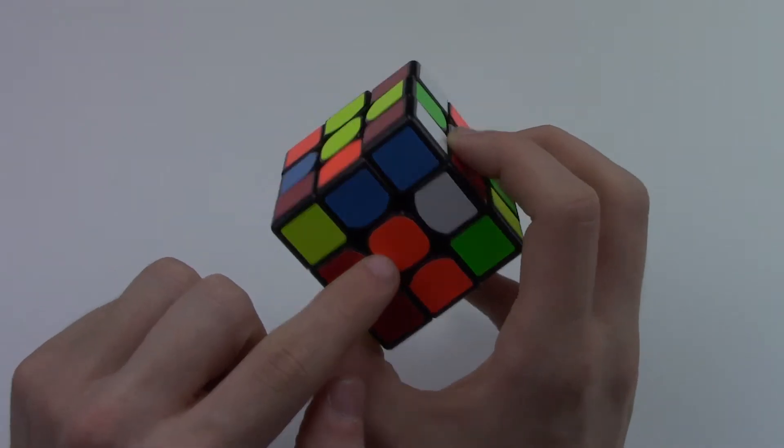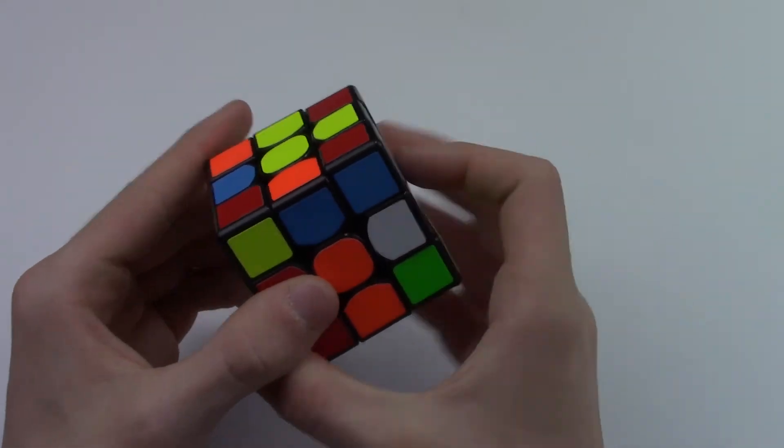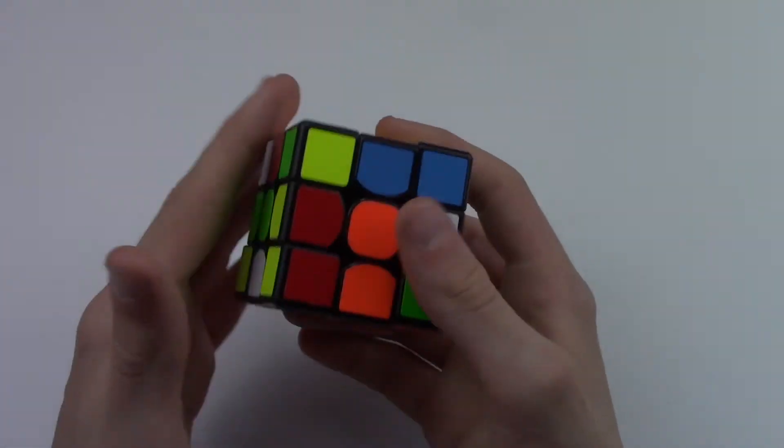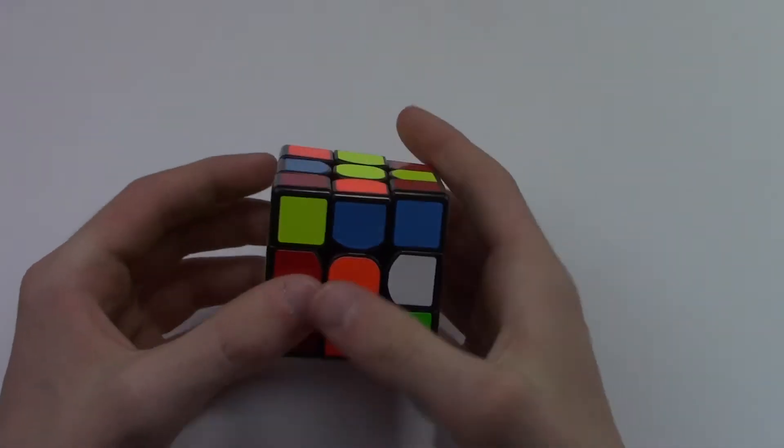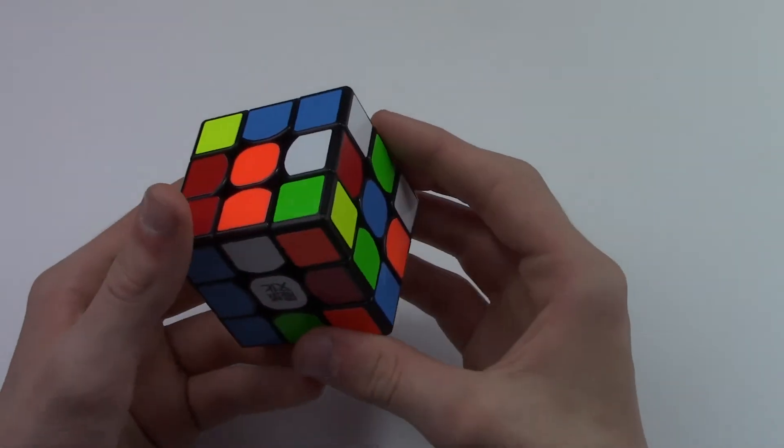What you want to do is have the ability to memorize the color scheme. So like knowing that there's orange, red, yellow, blue, green, and white without looking around at the colors. So you want to just cover it up and learn and memorize the color scheme so you can solve the cross differently.